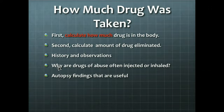So if the first pass effect can be avoided — which it can be by injection directly into the blood or by inhalation — that is what those who are abusing drugs will do. At autopsy, the presence of puncture marks, drug in the nostrils, burns on the lips and fingers as from smoking cocaine, will give clues about the drugs abused.